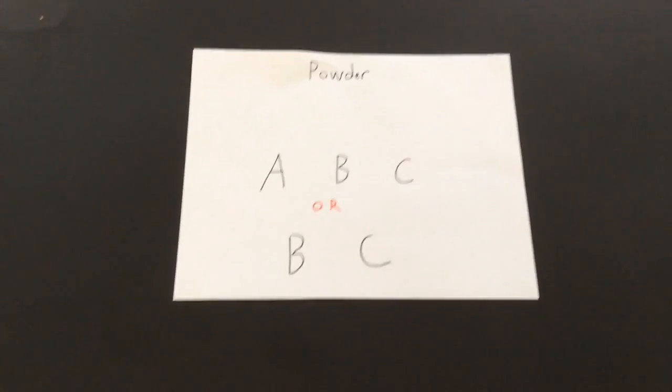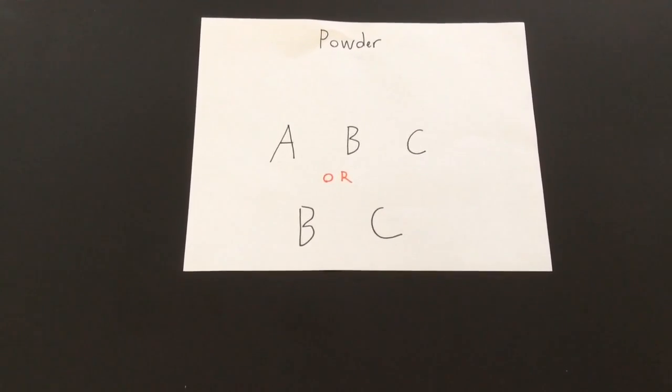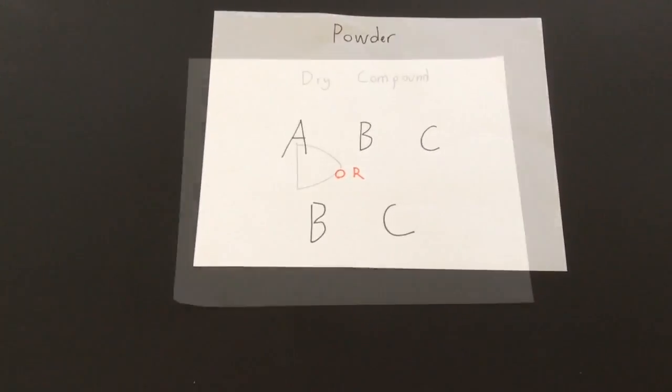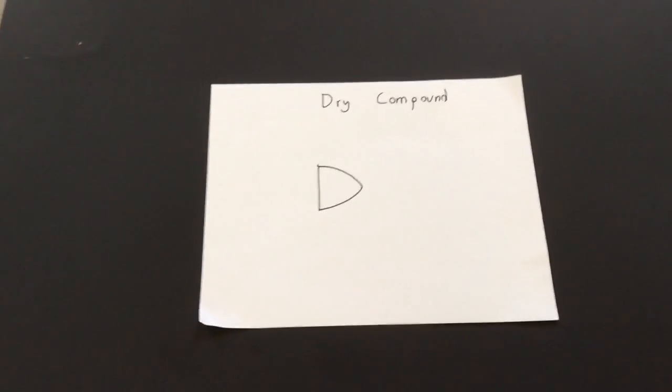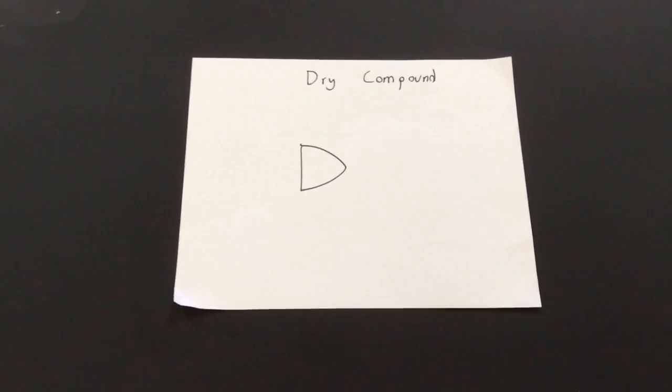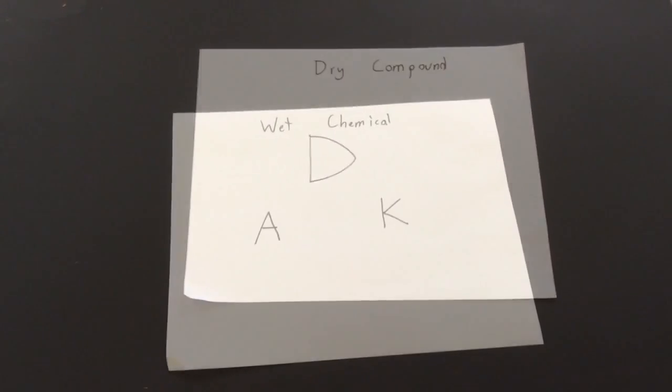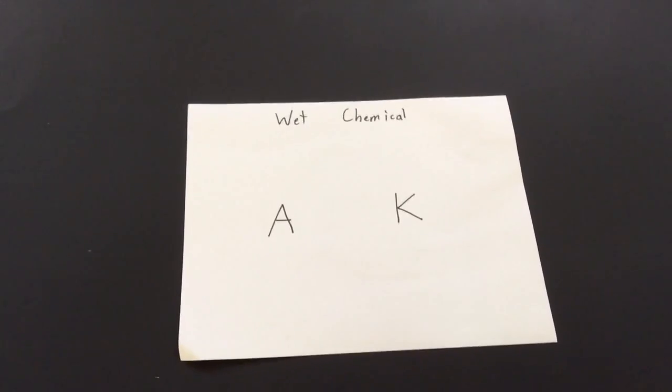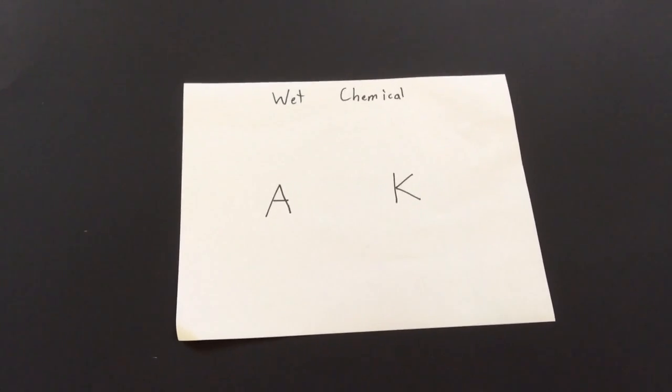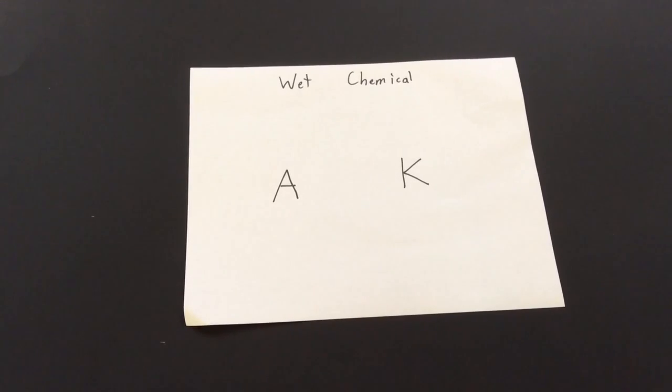The next type of agent is powder. It is available in either ABC powder or BC powder. The only extinguishing agent available to put out Class D fires is dry compound. An extinguishing agent for kitchens is wet chemical. It can put out Class A fires as well as Class K.